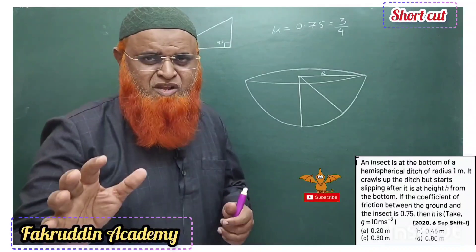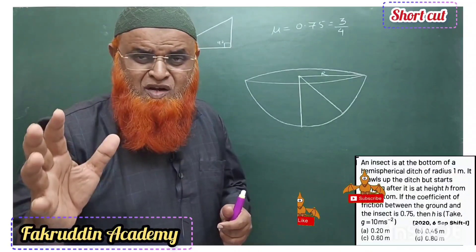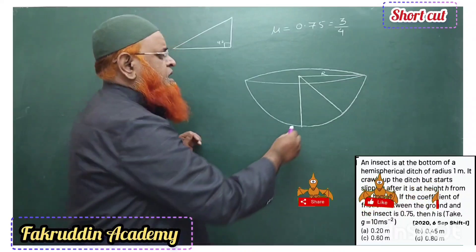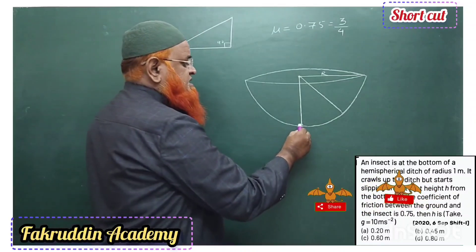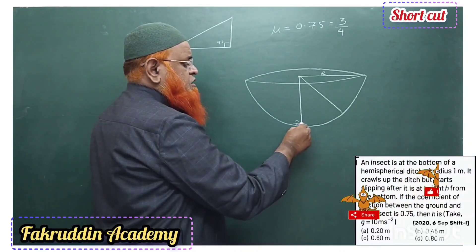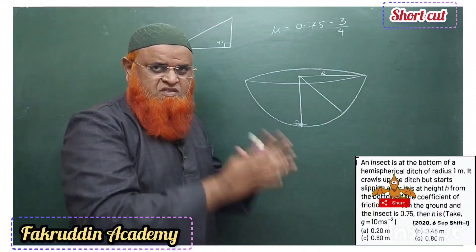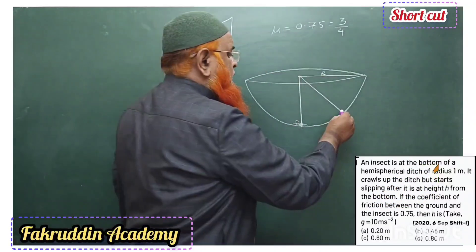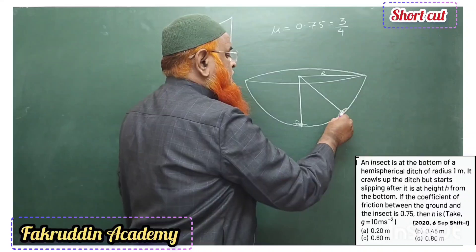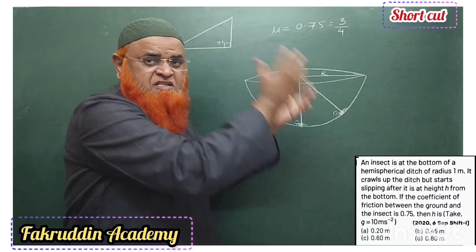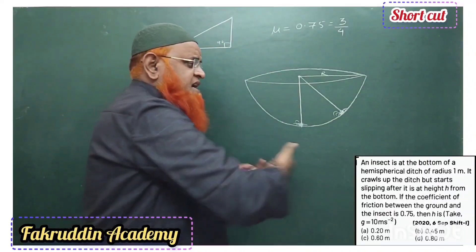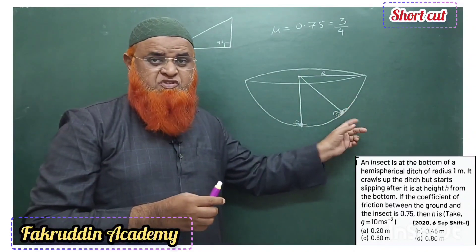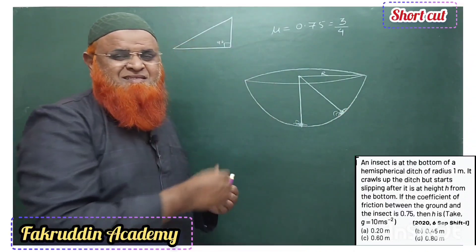Today I'm going to discuss a previous year question related to crawling of an insect. An insect is able to crawl on a spherical ball up to a certain point, and after that it slides back down. It tries to crawl upwards but again skids down from that same position.